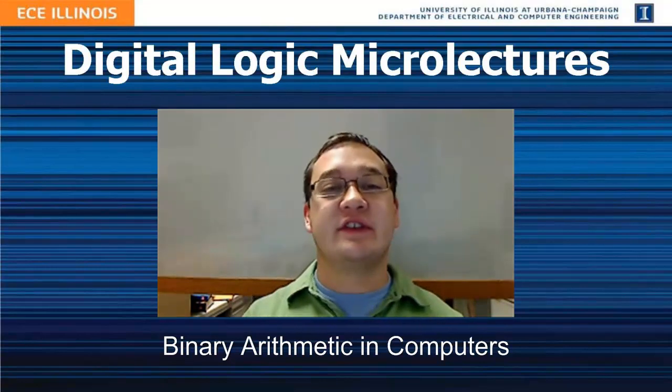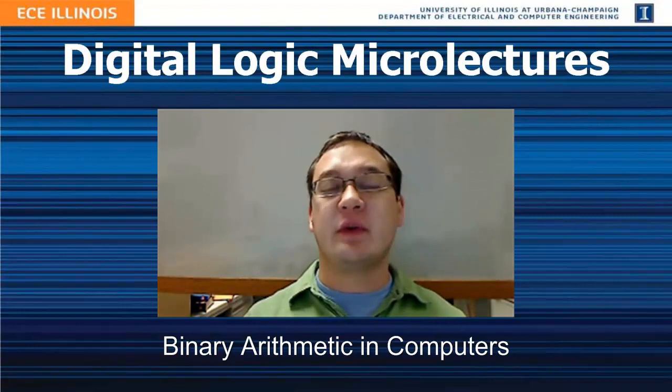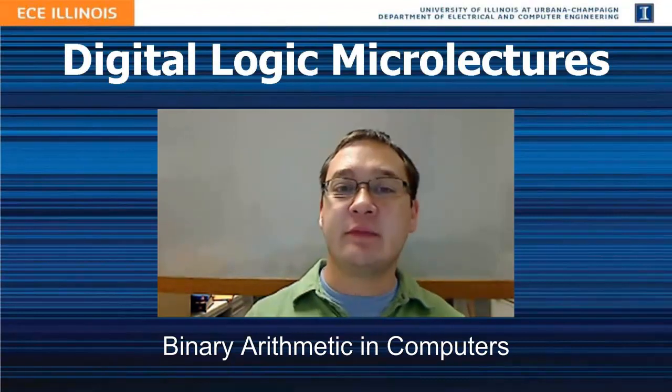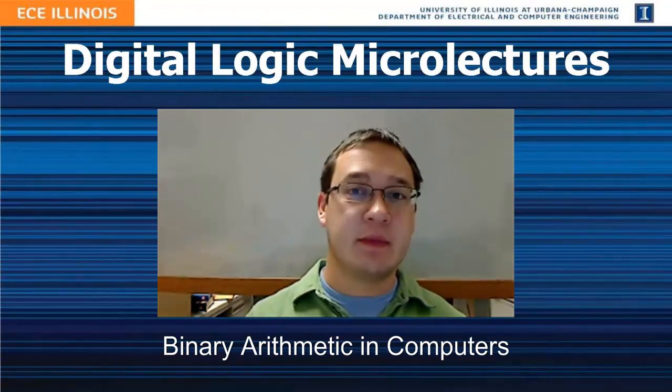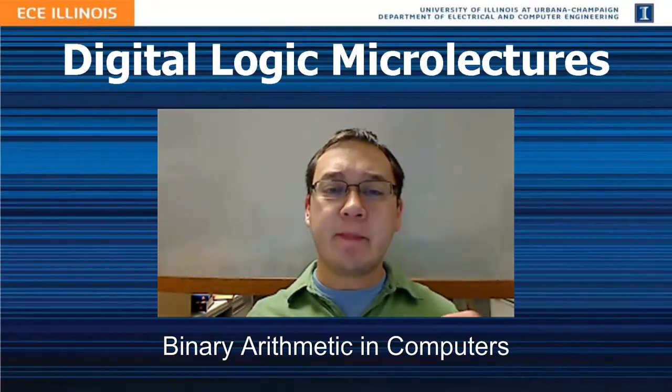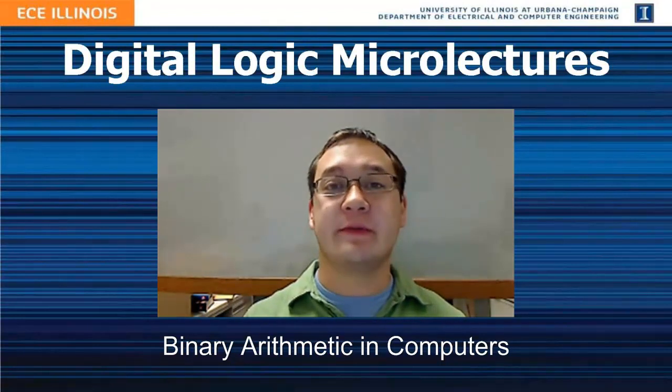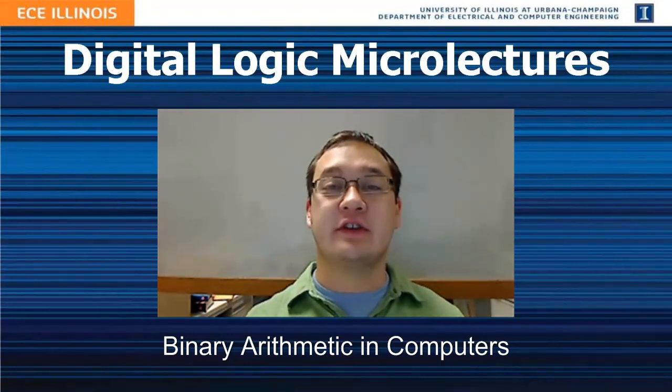Alright, in this lecture, we will discuss the nature of number calculations in a computer. Because computers represent all information, including numbers, with just two symbols, and because these symbols are stored in fixed length registers, we need to understand how these two constraints affect the way that computers perform numeric calculations.